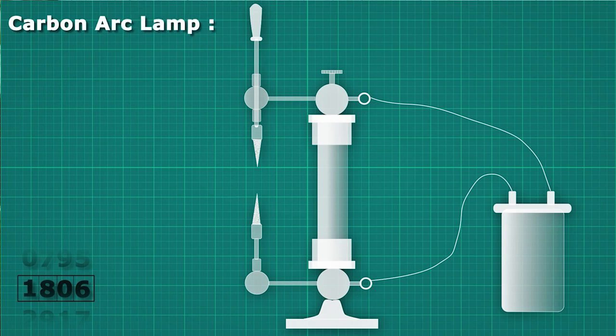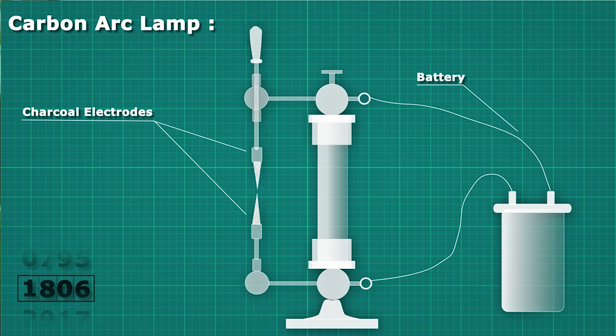Davy modified Volta's battery and used it for demonstrating his arc lamp. He used charcoal electrodes and a 2000 cell battery to create an arc across a 4-inch gap. He mounted his electrode vertically and connected it to the battery. To ignite the lamp, the rods are touched together, thus allowing a relatively low voltage to strike the arc. The rods are then slowly drawn apart and electric current heats and maintains the arc across the gap. He named it Carbon Arc Lamp.